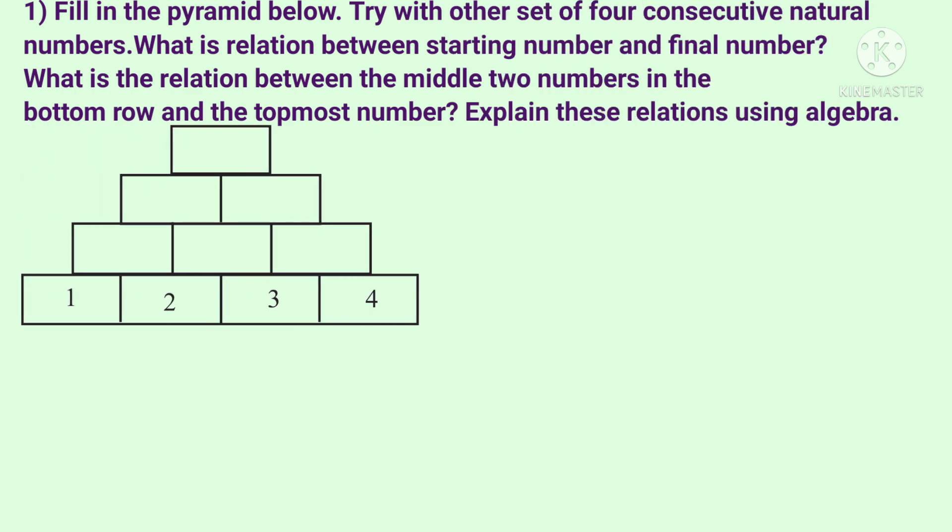Fill in the pyramid below. Try with other sets of four consecutive natural numbers. What is the relation between the starting number and the final number? What is the relation between the middle two numbers in the bottom row and the topmost number?